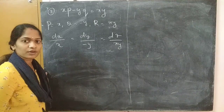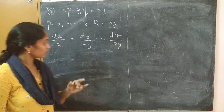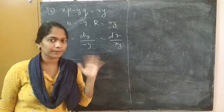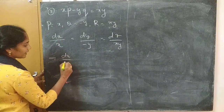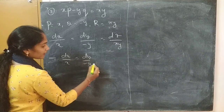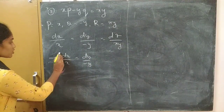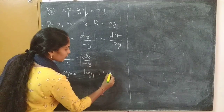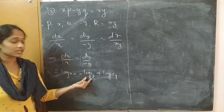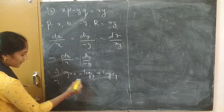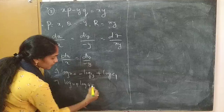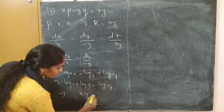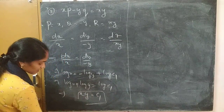The next step is to take any two fractions and integrate by doing variable separation method. Taking the first two fractions: dx by x is equal to dy by minus y. Now integration is applied on both sides. Integration of 1 by x gives log x; minus log y is taken to the LHS side. Then the logarithmic formula log a plus log b equals log ab is applied, and logs cancel. The first integral solution is xy equals c1.